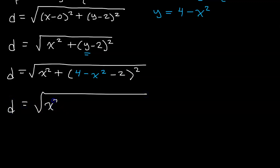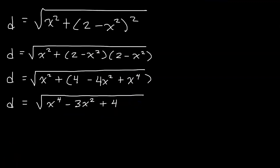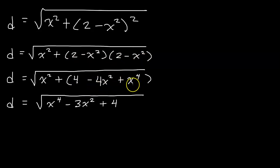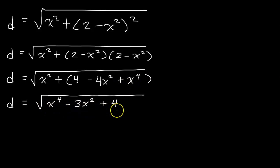Simplifying, that's going to be x squared, and then 4 minus 2 is 2, so we have (2 minus x squared) squared. That would be the same thing as (2 minus x squared) times (2 minus x squared), which if you multiply out gives you 4 minus 4x squared plus x to the 4th power. Combining like terms, you end up with the square root of x to the 4th power minus 3x squared plus 4.